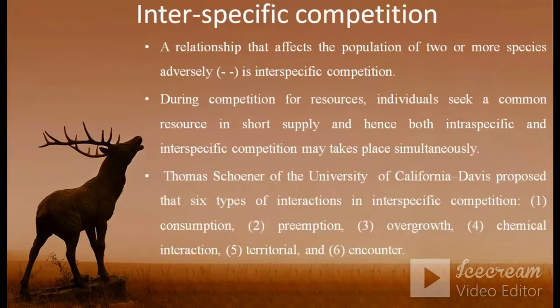Thomas Conner of the University of California, Davis, proposed that six types of interaction in inter-specific competition exist. That is, consumption, preemption, overgrowth, chemical interaction, territorial, and encounter. So, we can discuss it one by one.